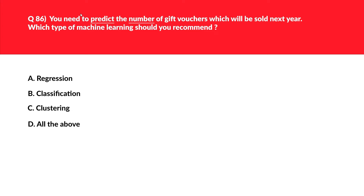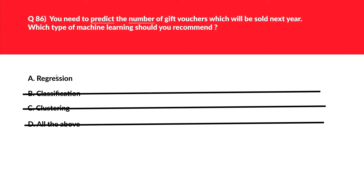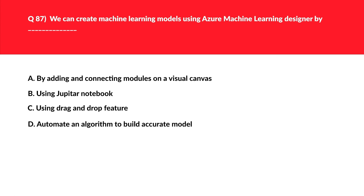This is a straightforward question — since we need to predict a numerical value, we need regression. We'll keep option A, reject the rest, and lock it as the correct answer.